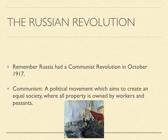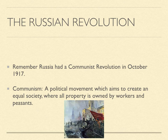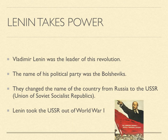Remember from when we looked briefly at World War I that Russia had a communist revolution in October 1917. Communism is a political movement which aims to create an equal society where all property is owned by workers and peasants. Russia had a revolution in February of 1917 but made the severe mistake of staying in World War I. When Lenin and the Communist Party took power in 1917 they made sure to get straight out of World War I. Lenin was the leader of this revolution and his party was the Bolsheviks, who changed the name of the country from Russia to the USSR, the Union of Soviet Socialist Republics.